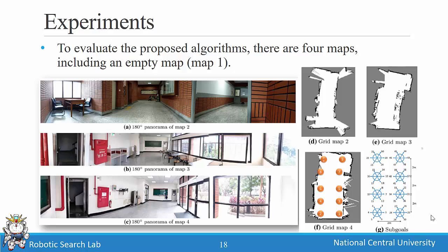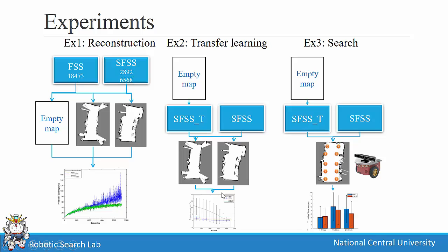The experimental setting is as follows. Four environments are used: an empty map, Map 1, Map 2, Map 3, and their corresponding query maps. Three experiments are designed. Experiment 1 is a reconstruction experiment comparing FSS and SFSS with different basis numbers across the empty map, Map 2, and Map 3, measuring reconstruction accuracy.